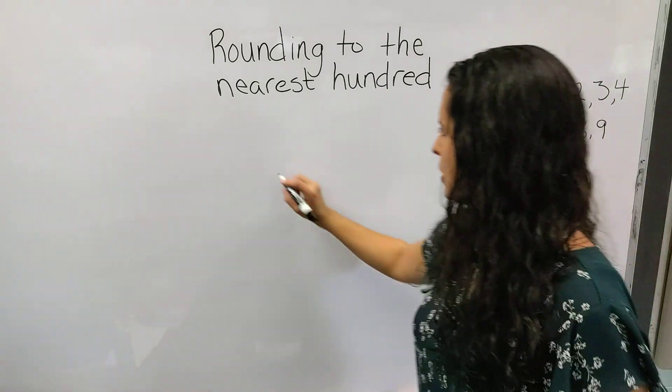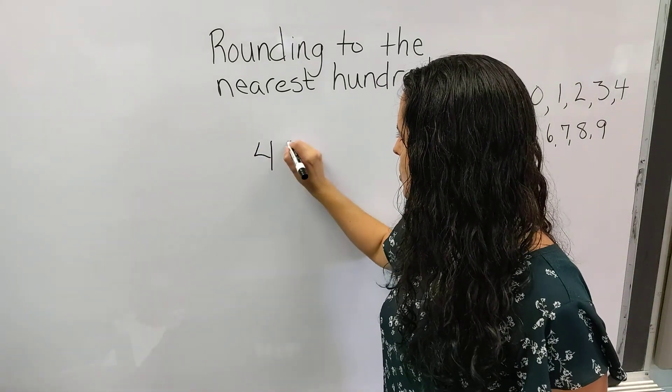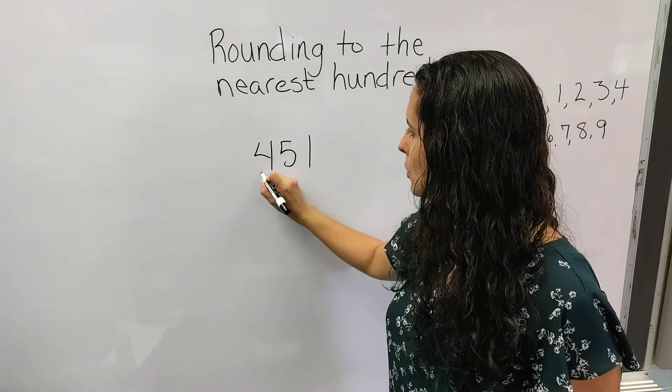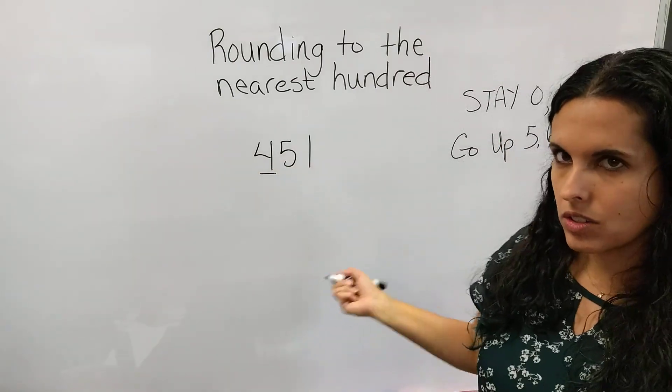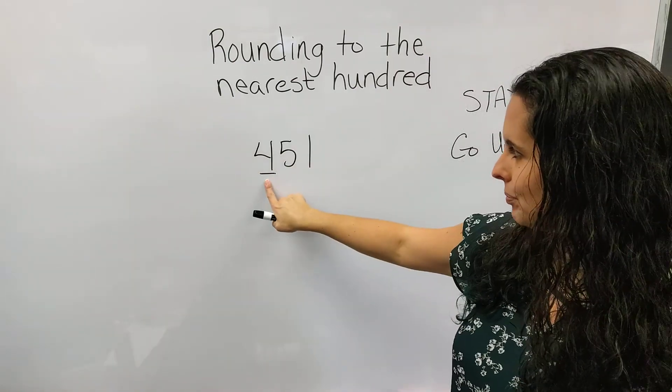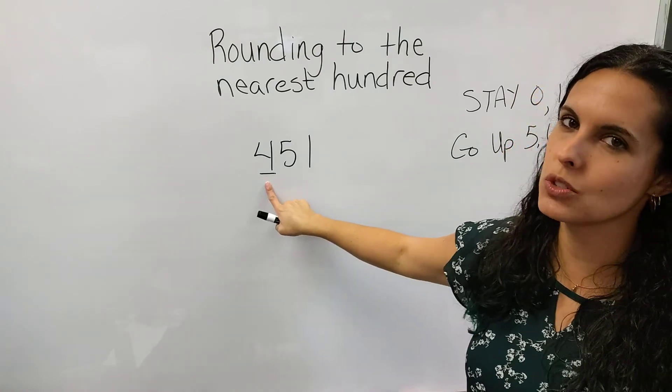We're rounding to the nearest hundred. We always want to underline the place that we're rounding. So since we're doing the hundreds number, we underline the hundreds place. The 4 is in the hundreds place.